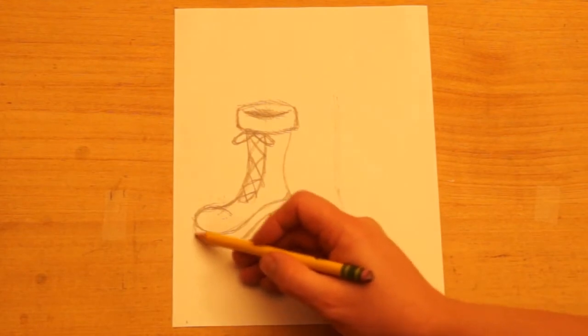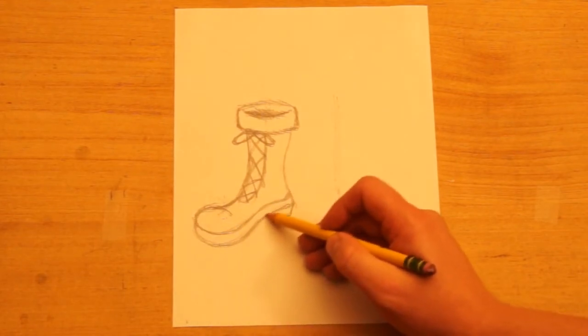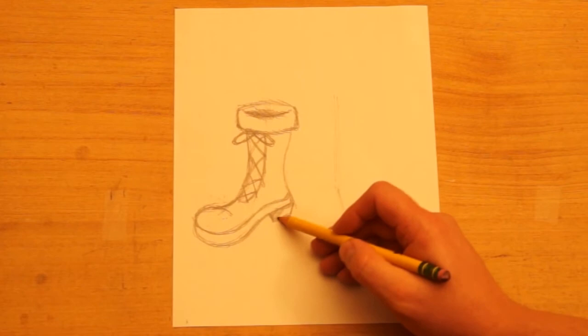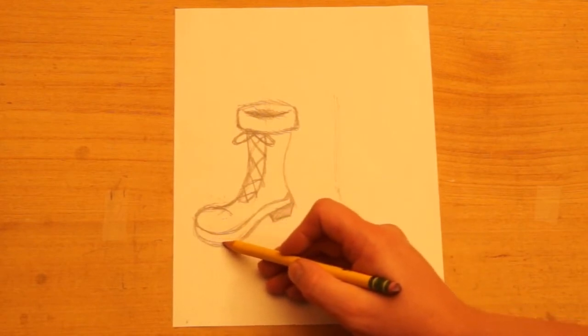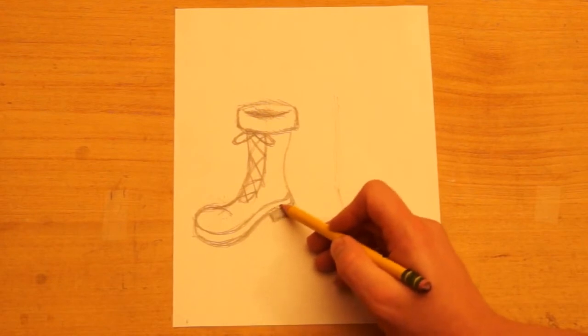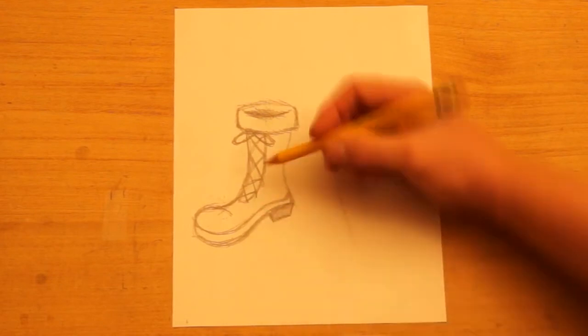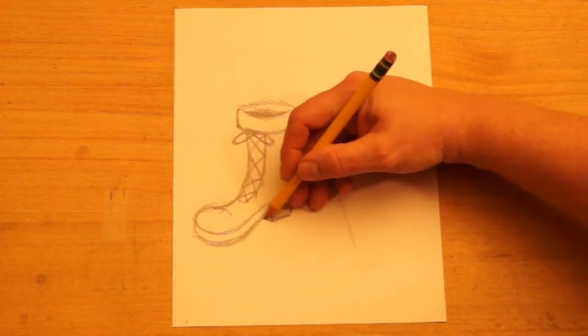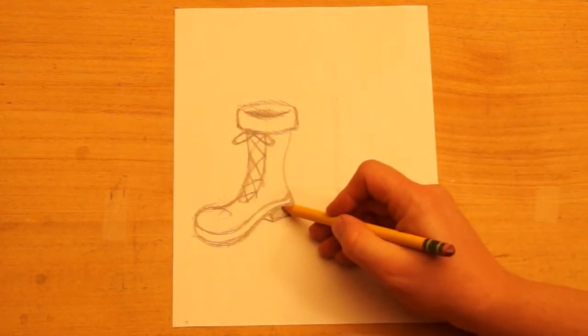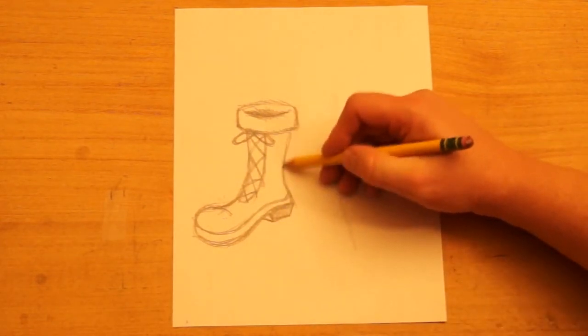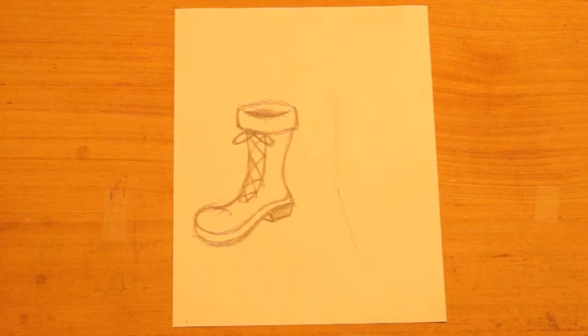You can color these in with whatever designs or patterns, or just make them solid colors, or leave it black and white. I think I'll darken the sole of the boot down here, and make a line that slants back under here. There's that one.